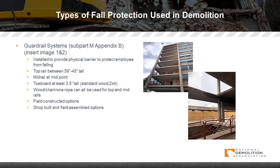Types of fall protection used in demolition include guardrail systems, installed to provide a physical barrier to protect employees from falling, such as a top rail between 39 and 45 inches tall. After the top rail is installed, the mid rail is placed at the midpoint, and then the toe board, which is at least three and a half inches tall — a standard two-by-four would work. Wood, chain, or wire rope can all be used for top and mid rails, but chain or wire rope must be taut and able to withstand a few hundred pounds of lateral pressure — it cannot be loosely draped between two columns.